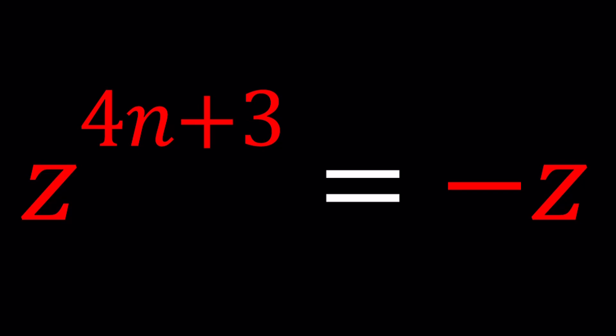So we're going to be solving for z values. So we have a number when we raise it to an integer power in the form of 4n plus 3, which means a number that leaves a remainder of 3 when divided by 4 or 3 mod 4, and we get the opposite of our number.